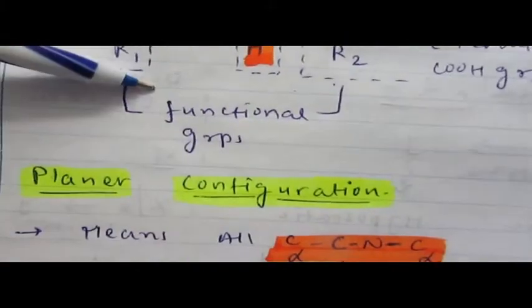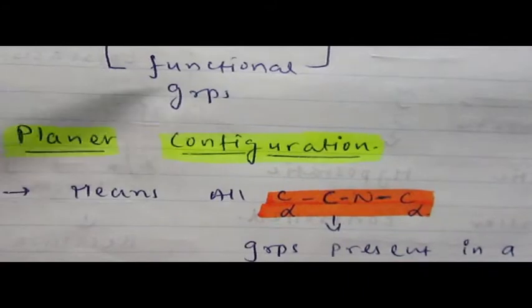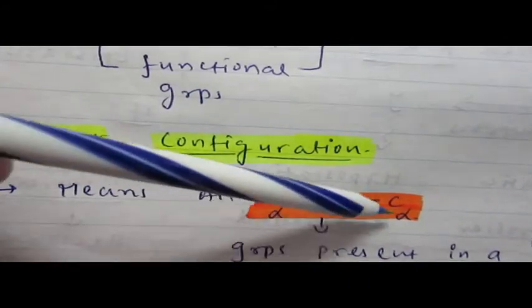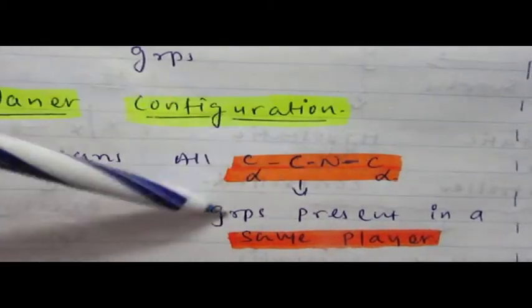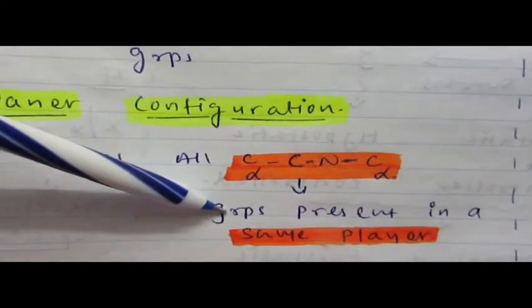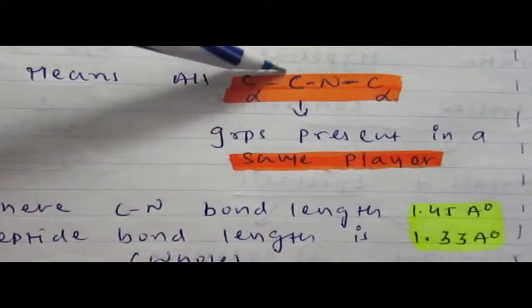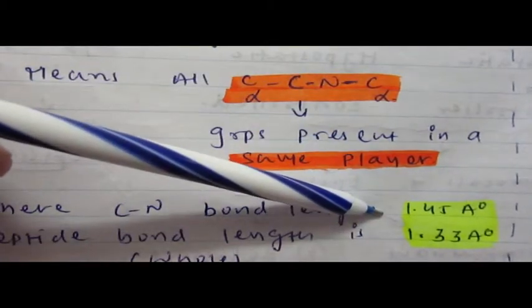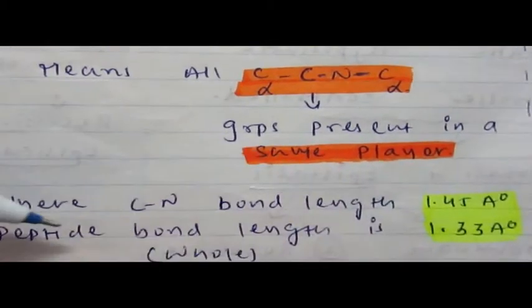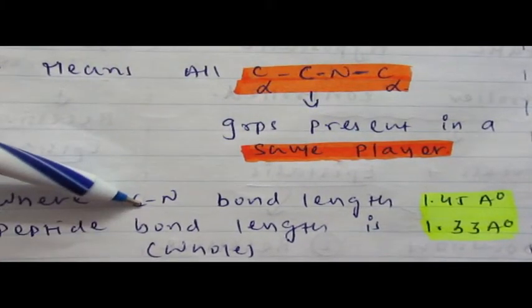Now peptide bond contains a planar configuration. That means all C alpha, C, N, and C alpha carbons are present—these four groups are present in the same plane. The bond length of C-N bond is 1.45 angstrom, whereas the peptide bond length is less at 1.33 angstrom.